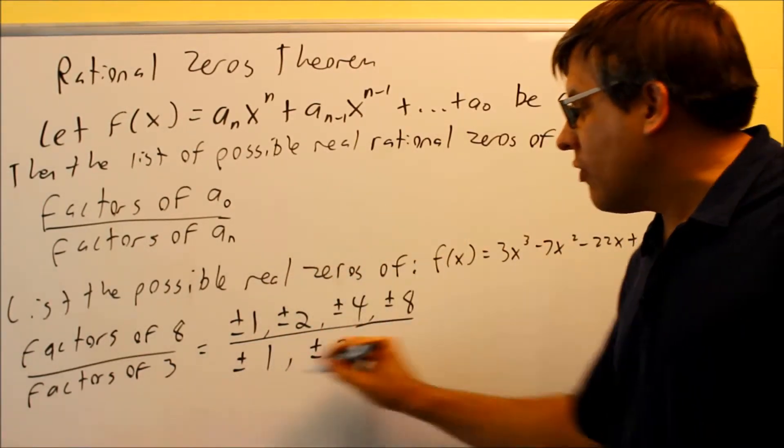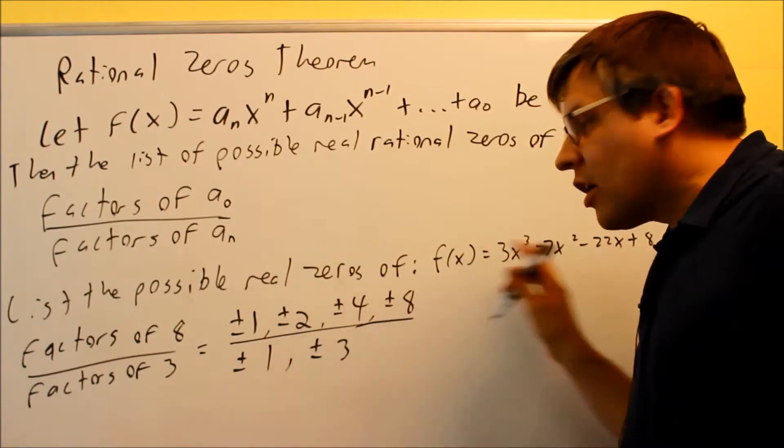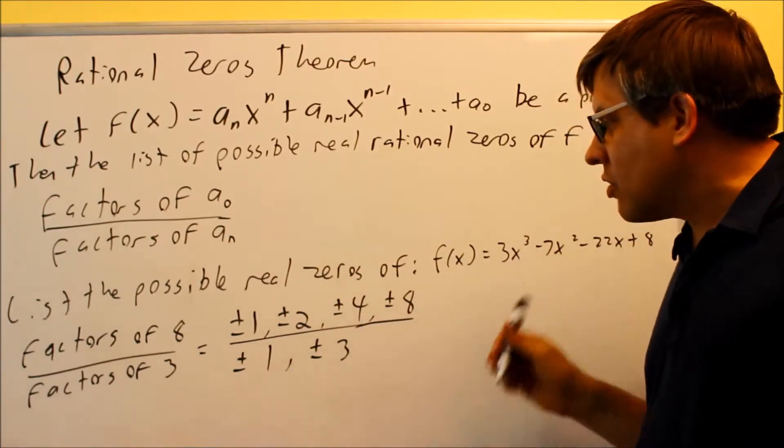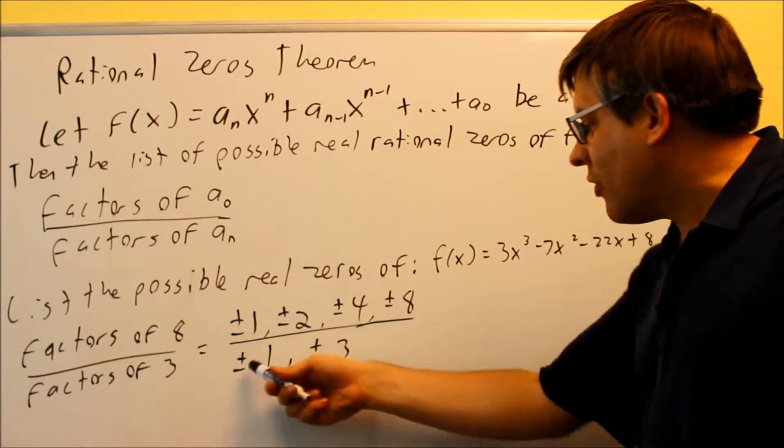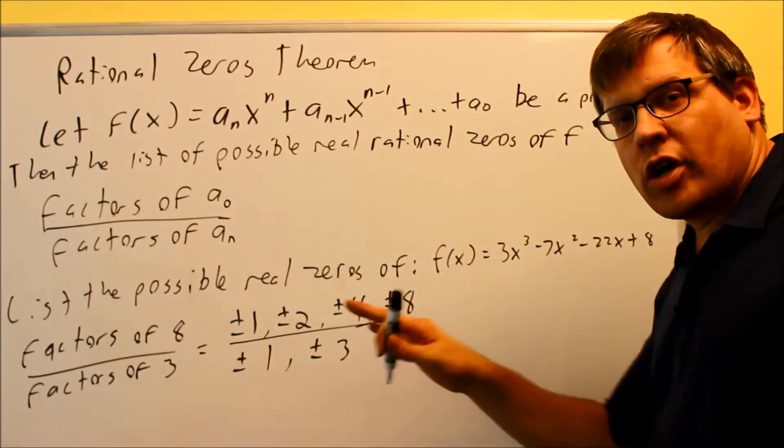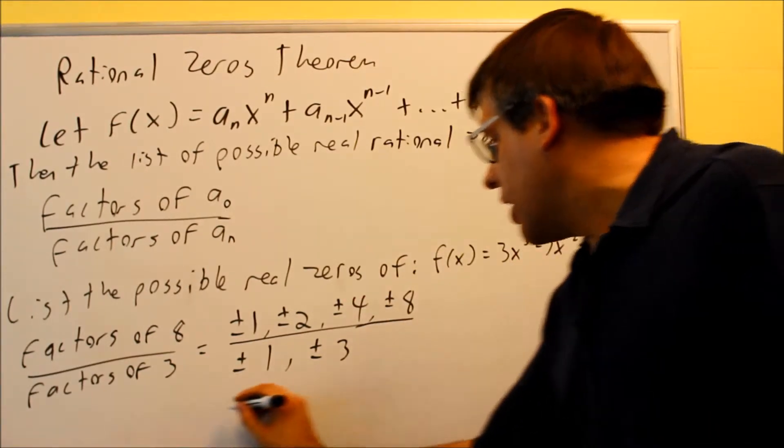But you don't want to leave your answer as this list. You want to actually write all of it out. So the way that you do that is you're going to take all the numbers on top divided by all the numbers on the bottom, and you're going to write a list on that. So here's what it will look like.